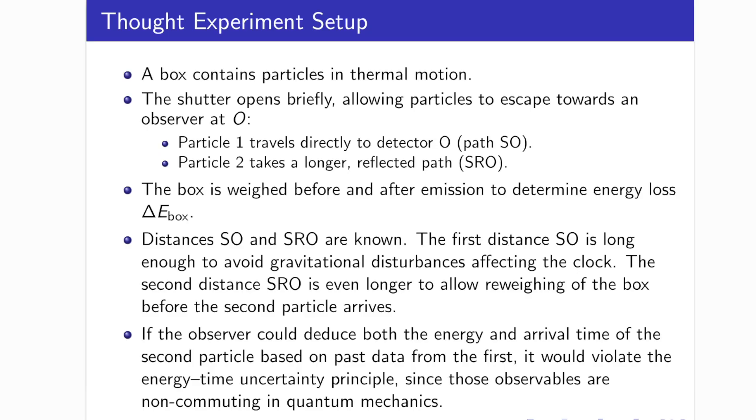Imagine a small box filled with particles, all moving chaotically in thermal motion. This box has a tiny shutter, which opens briefly, just long enough for one or two particles to escape. These particles travel toward an observer positioned at a point we'll call O. In some instances, two particles are released simultaneously. The first particle travels directly to the observer. We call this the SO path, moving straight from the shutter to the detector. The second particle follows a longer path. It reflects off an ellipsoidal mirror before also arriving at the observer. This longer route is called the SRO path. Before and after the shutter opens, the box is weighed with high precision. By comparing the before and after readings, the observer determines the energy lost by the system.